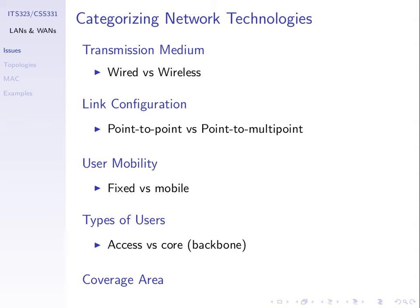We can also classify based upon the link configuration. Does the network use point-to-point links or point-to-multipoint? Point-to-multipoint means one person transmits and multiple receive. Point-to-point means one transmits and one receives. The link configuration may differ, and we may have different designs and different performance depending on which we use.